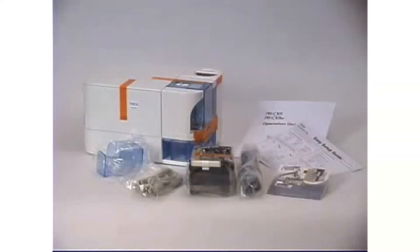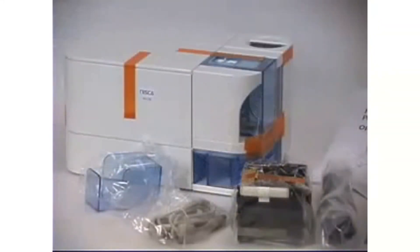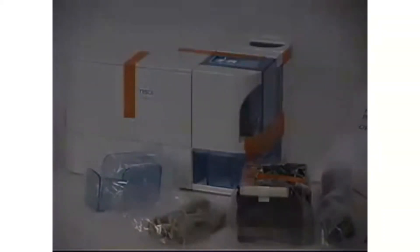Once you have removed all of the contents in the box, you should have received a user's manual, easy setup guide, USB cable, exit box, power cord, a free ribbon, installation CD, and the printer.